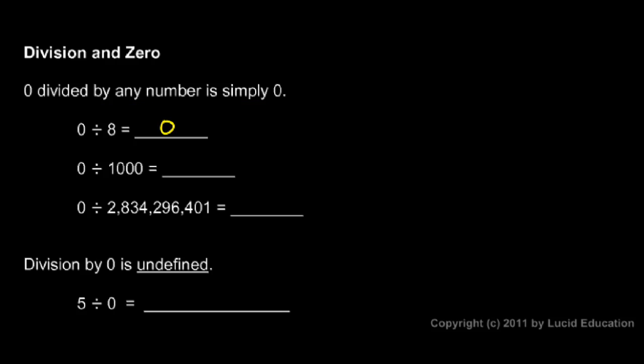So zero divided by eight is zero. Zero divided by a thousand is zero. Zero divided by this great big number is zero. I don't even have to read the number. It doesn't really matter what it is. Zero divided by anything is zero.